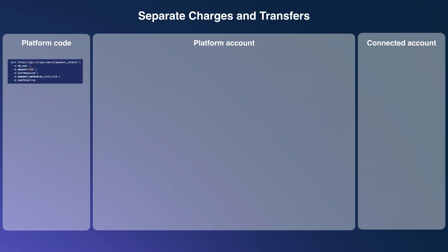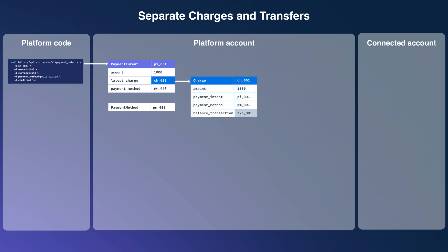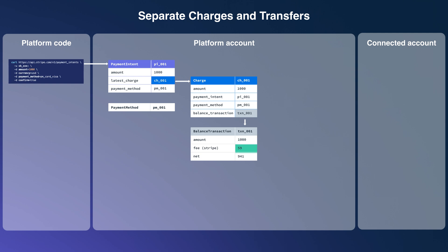When we make our first API call, it creates a payment intent and a payment method on the platform account. The payment intent object tracks someone's intent to pay a specific amount of money. It also contains a reference to the underlying charge object, which represents a single attempt to move money into a Stripe account. Every time funds move in or out of a Stripe account, a balance transaction object is created. This one shows the account got $10 but had to pay the Stripe fee of $0.59, so the platform account netted $9.41.